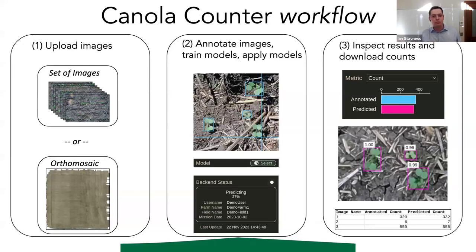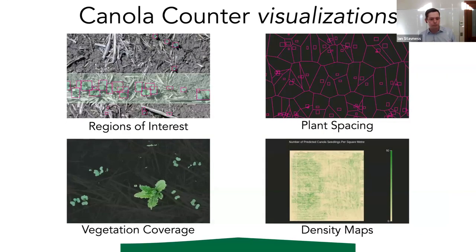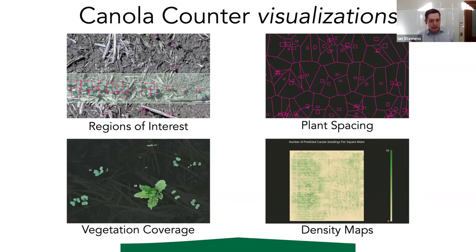In addition to spreadsheet outputs, you can define regions of interest, get vegetation coverage in addition to plant counts, estimates of plant spacing by looking at how separated the plants are, and large-scale density maps over entire fields. These visualizations came from discussions between Eric and Kaylee about what would be most useful — how to get results in a way that matches what plant scientists need.